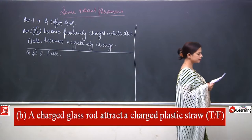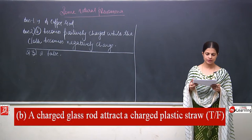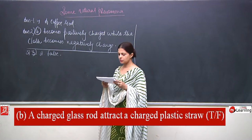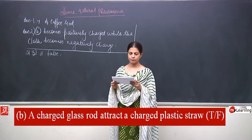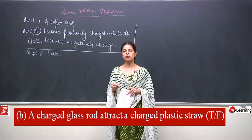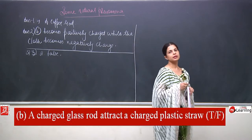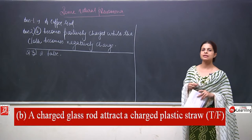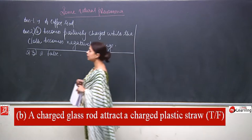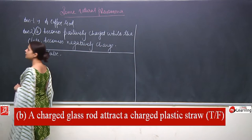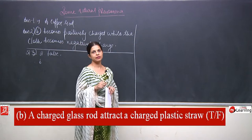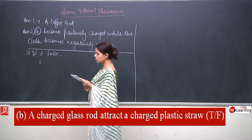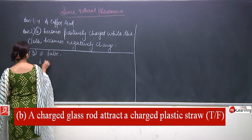Statement B is: a charged glass rod attracts a charged plastic straw. This is TRUE, because one gets a positive charge and the other gets a negative charge, and opposite charges always attract each other while like charges repel.